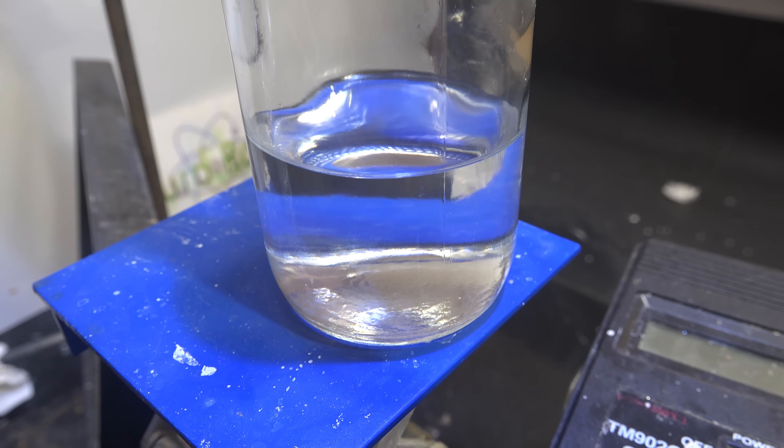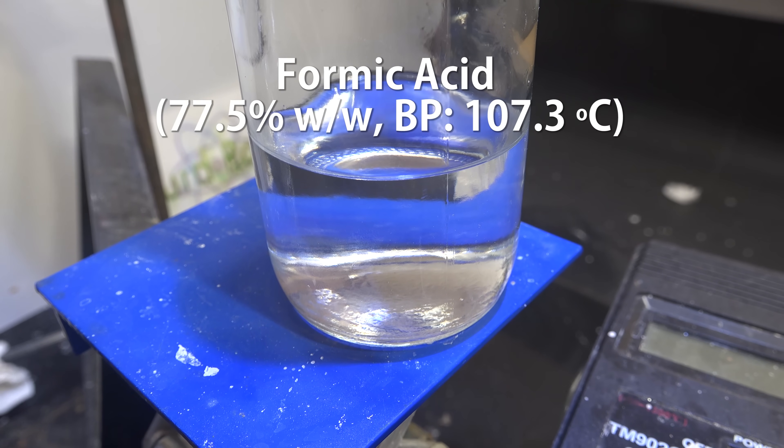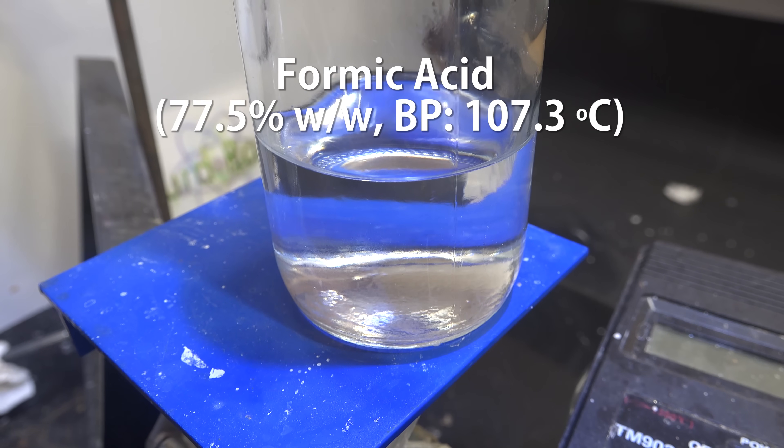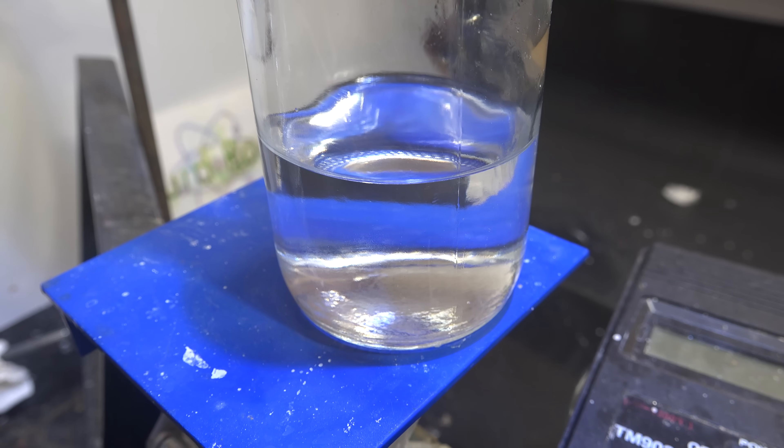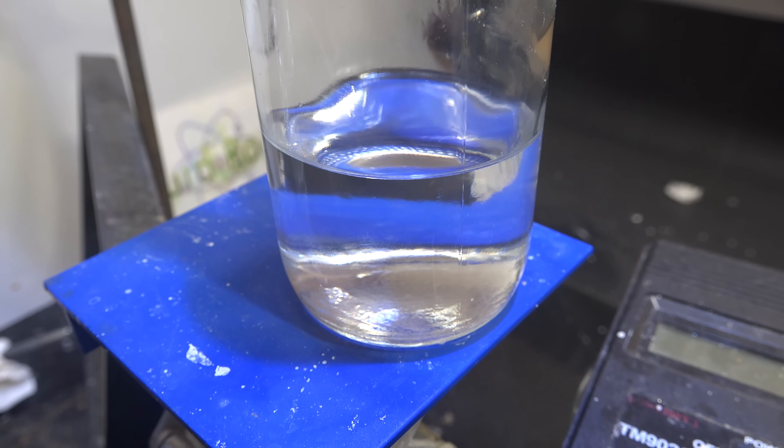And there you have it, an azeotropic mixture of 77.5% formic acid and water. Now some of you might want to dry it further and get pure formic acid but I recommend against that.